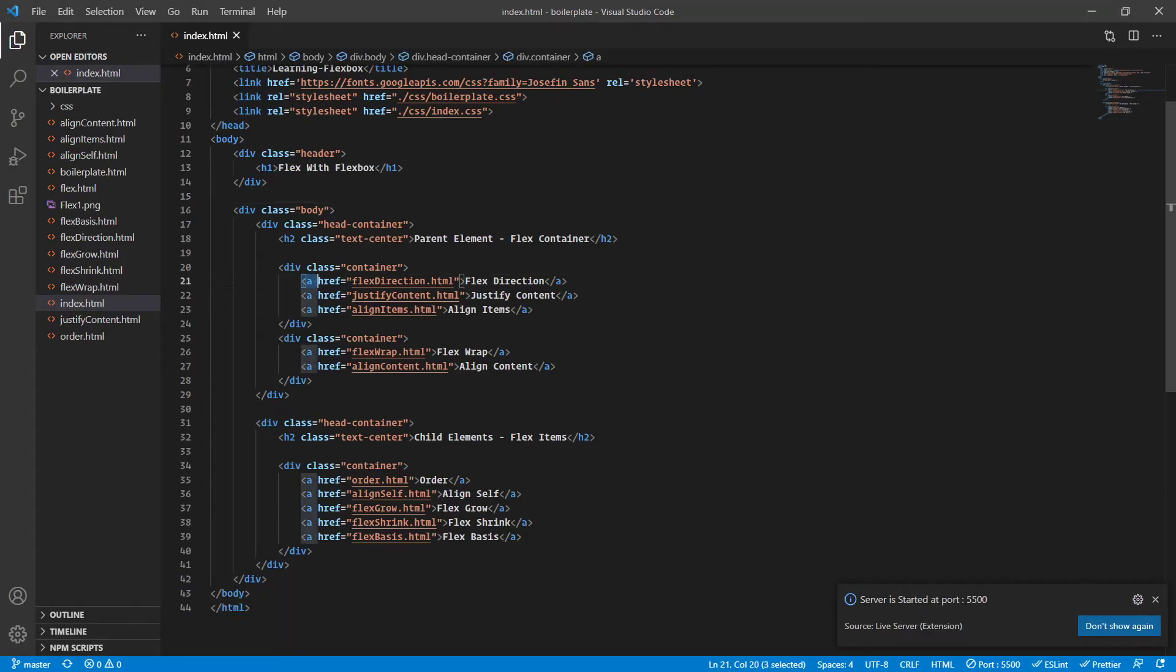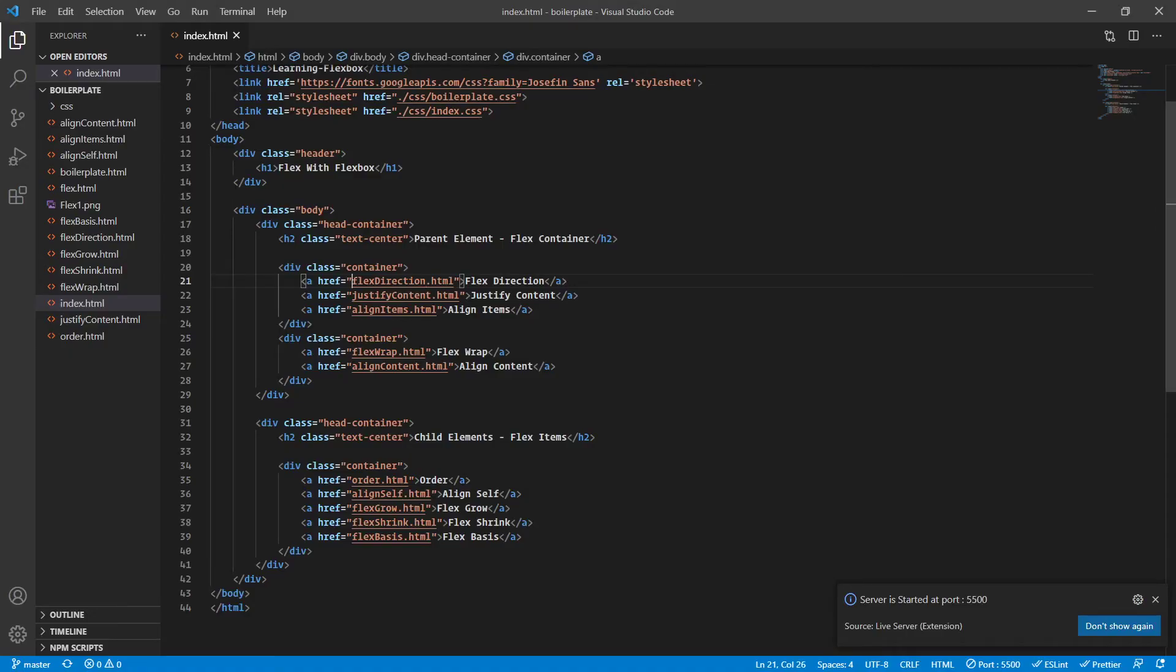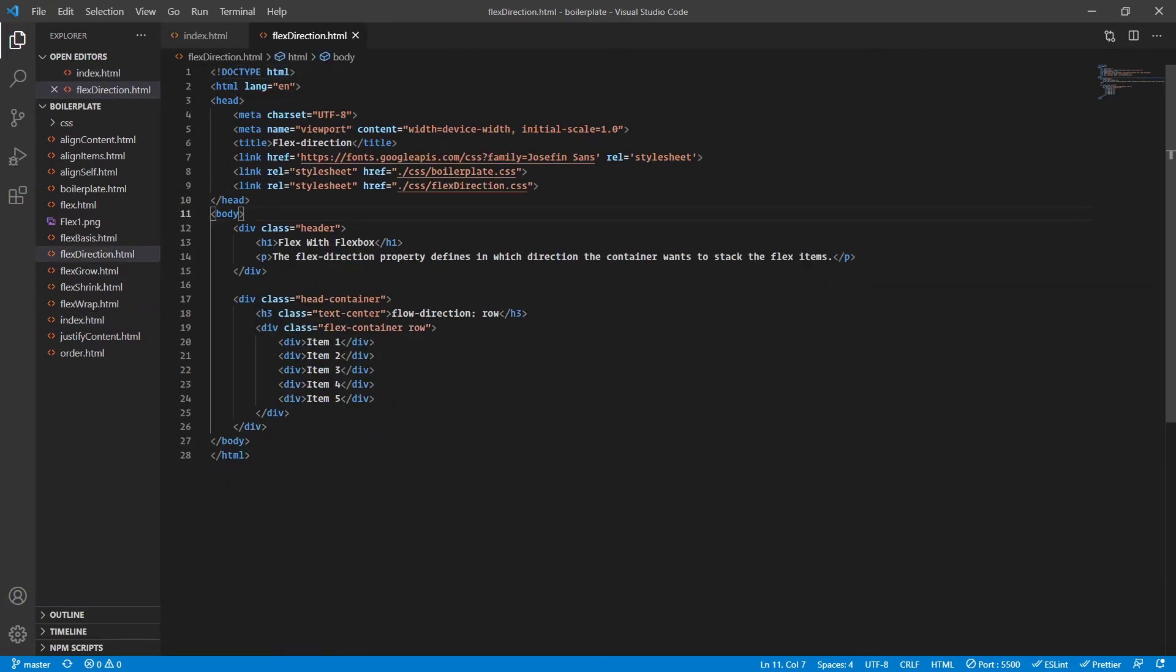Each of these buttons is basically an anchor tag. Each of these anchor tags is linked to its own individual file. For example, the flex direction is linked to the flex-direction.html, and we can easily open it from here.